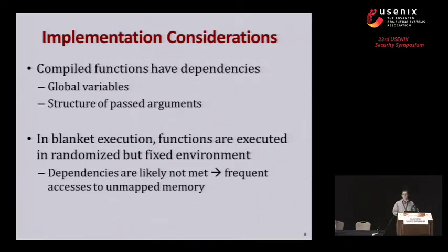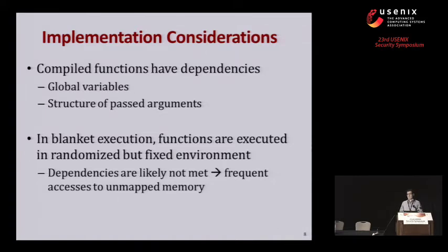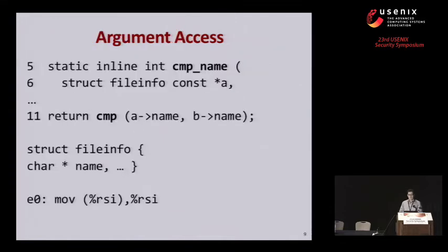Functions compiled by a compiler often exist within a larger program framework and frequently have dependencies — on global variables, on the structure of passed arguments, and so on. In blanket execution, functions are executed in a randomized but fixed environment, meaning most of these dependencies are very likely not mapped. The problem arises that should a function try to access unmapped memory, execution would abort and we would no longer be able to collect semantic information for our feature vectors. We therefore have to counteract this.